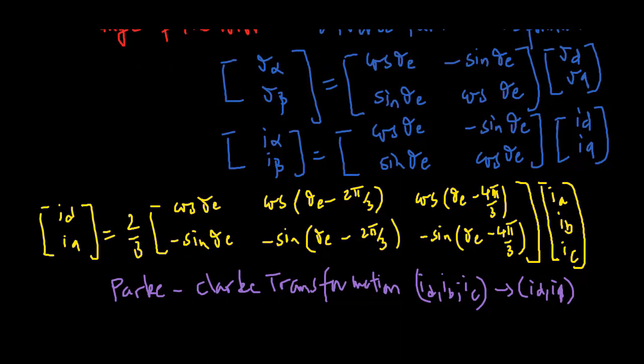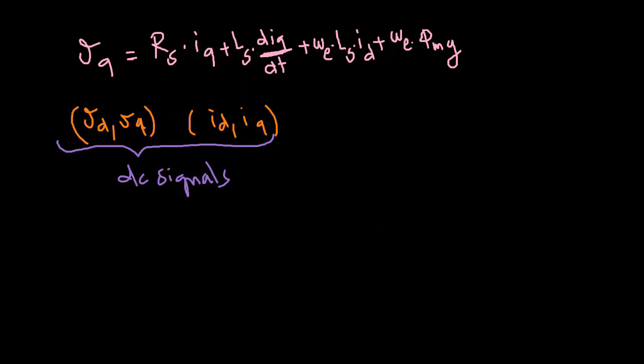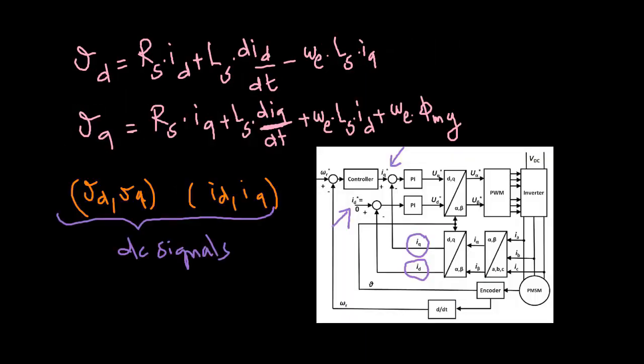The extraordinary fact about the mathematical model in the DQ reference frame is that the current and voltage variables are no longer sinusoidal signals — instead, they are DC signals. Because of this, in the design of a control system, the reference signals to the closed-loop system could be constants or step signals, which explains why PI controllers are widely used for this class of systems.